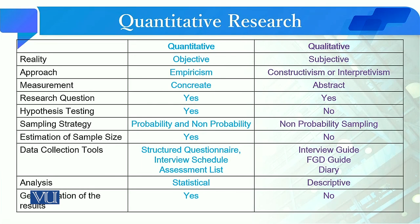If I compare quantitative and qualitative research, the first dimension on which we need to compare them is reality. For the quantitative researcher, reality is an objective phenomenon, but for the qualitative researcher it is a subjective phenomenon. Our approach in quantitative research is empiricism — we conduct the research and collect the data.